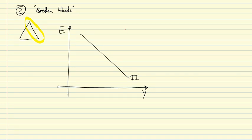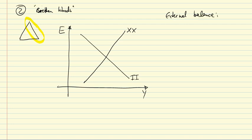The second curve, labeled XX, describes external balance, and it is upward sloping. The current account is a negative function of income — higher income means higher imports and a lower current account — and a positive function of the exchange rate: a more depreciated exchange rate raises exports and increases the current account surplus.